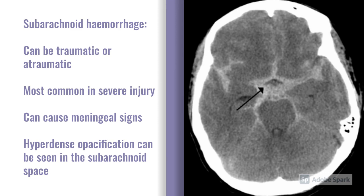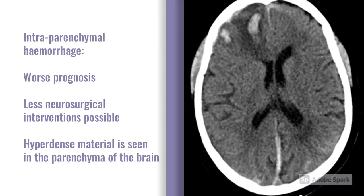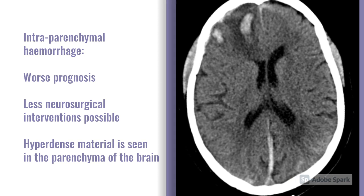The final example of intracranial hemorrhage is intraparenchymal hemorrhage. These occur in the brain parenchyma itself and have the worst prognosis — there's much less that neurosurgeons can do and very little they can actually intervene on. These are likely to be medically managed with blood pressure control and reversal of anticoagulants.